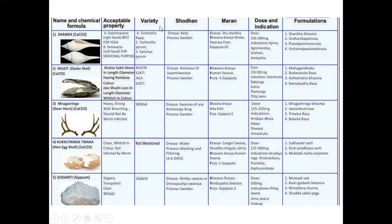Now we will talk about the variety: Turbinella Rapa, Turbinella Pyrum, and Shankha Pyrum. You must remember the Pyrum word. Now about Shodhana — how to do Shankha Shodhana, detoxification of Shankha. Dravya used is Kanji, and the process is Svedhana of Shankha in Kanji, which makes the purified Shankha Bhasma. Then Marana — Dravya is Shuddha Shankha, Bhavana Dravya is Nimbuswaras, and two Gajaputas are given for Marana of Shankha.